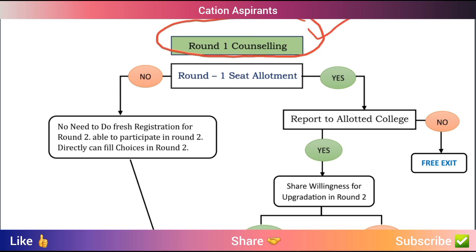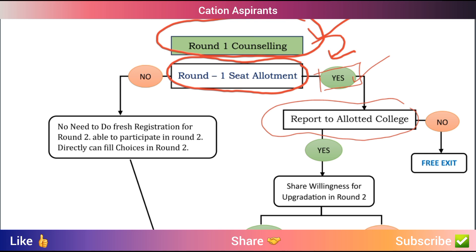In Round 1 counseling, you have registration, choice filling, and choice locking. After choice locking, you receive the Round 1 seat allotment result. Once you have seat allotment, you are assigned a medical college. You then have to report with all your original documents to that college.